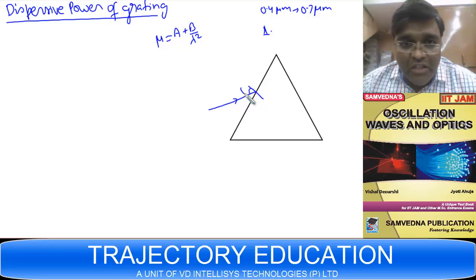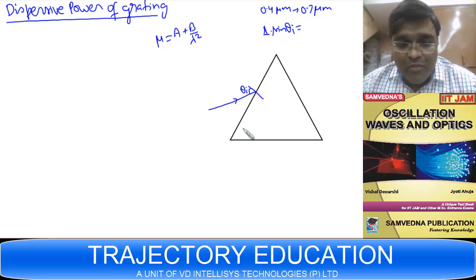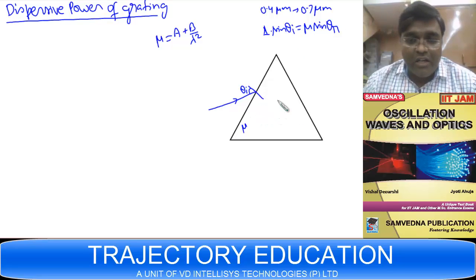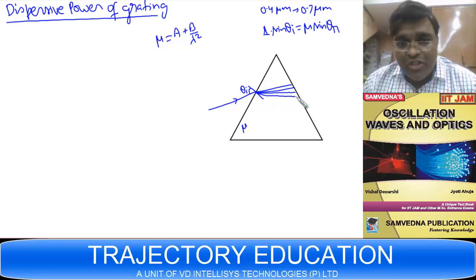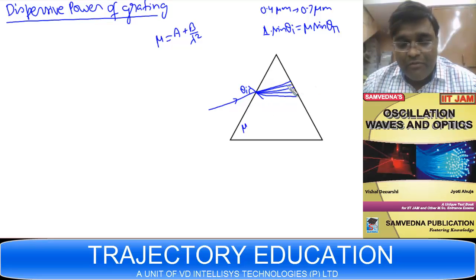The angle of incidence theta_i is the same for all wavelengths. By Snell's law: 1 × sin(theta_i) = mu × sin(theta_r). Since glass presents different mu for different wavelengths, the angle of refraction theta_r is different for different wavelengths, and that leads to dispersion — the formation of different refracted rays for different wavelengths.